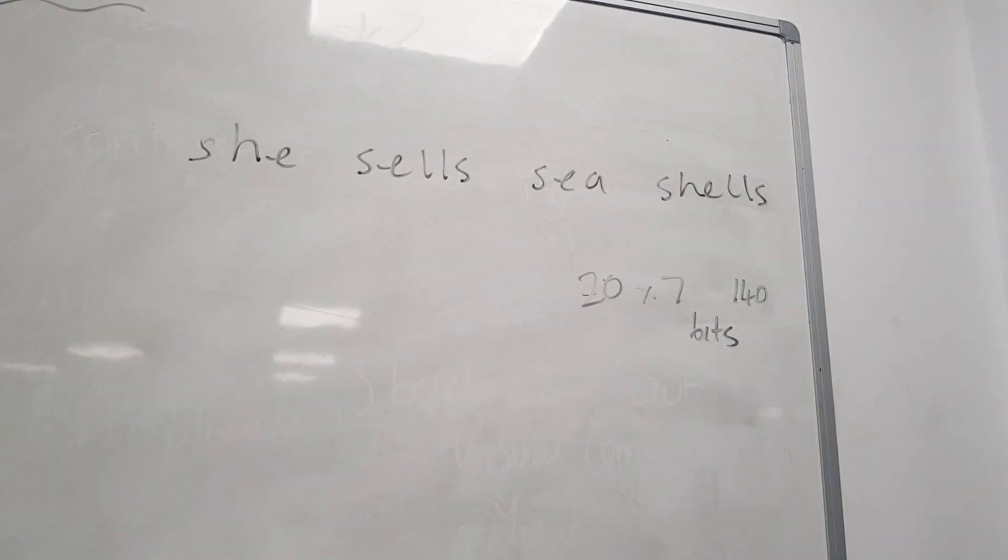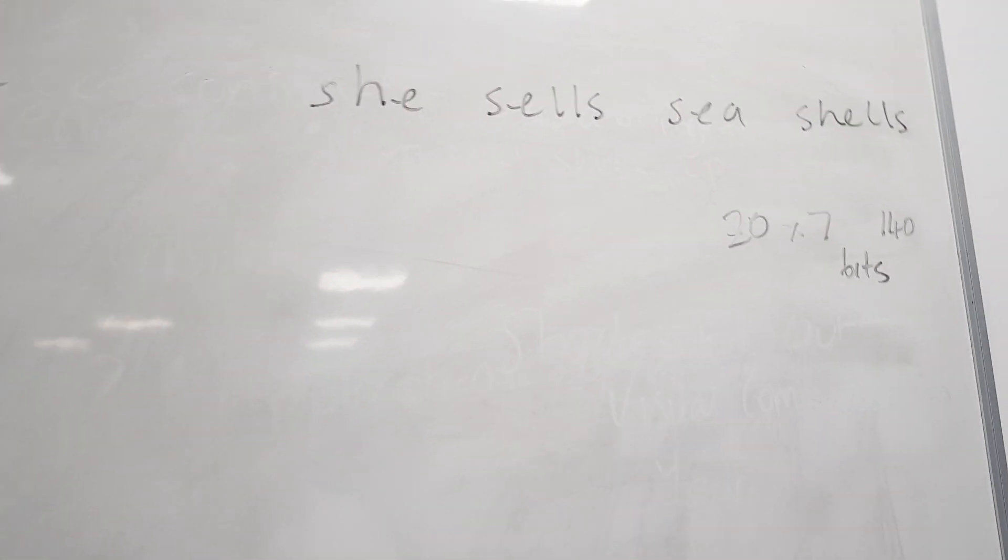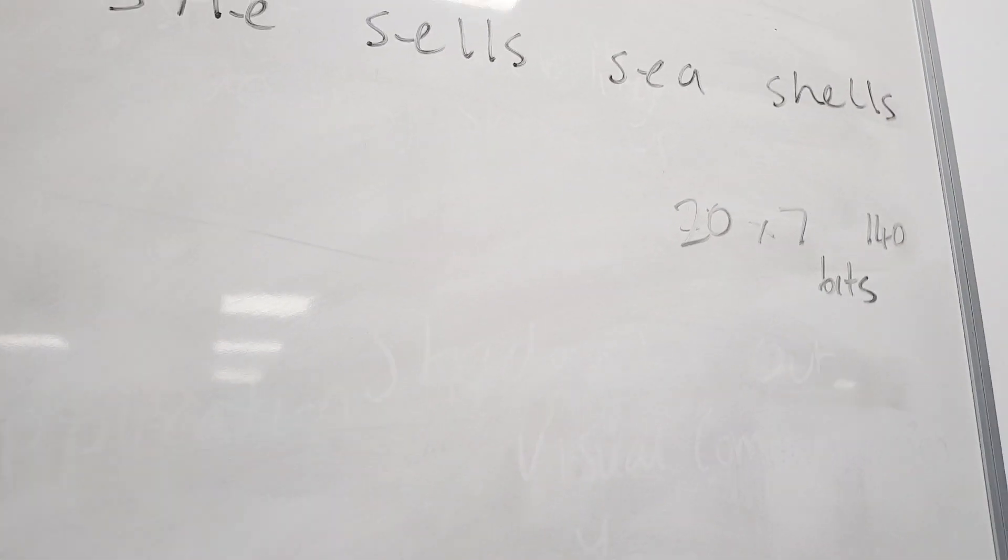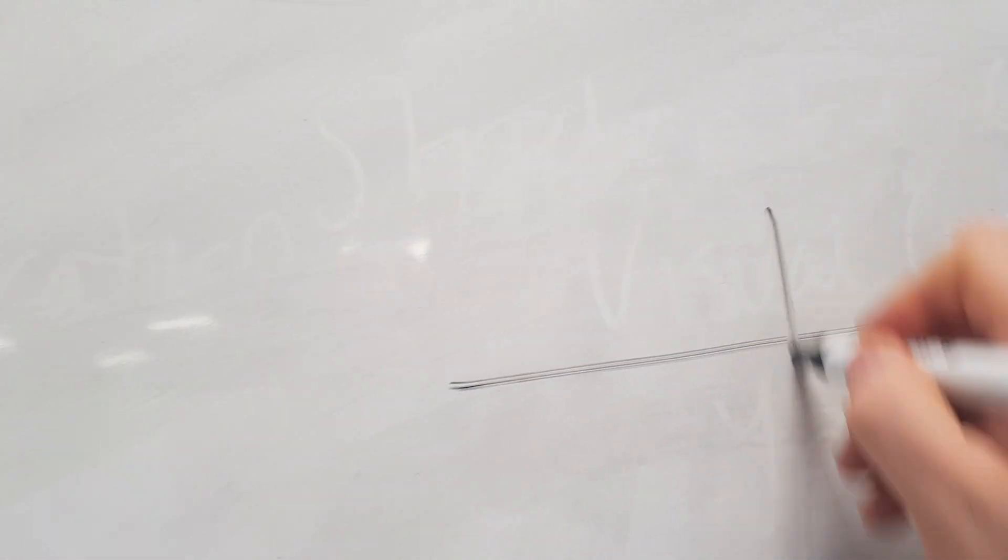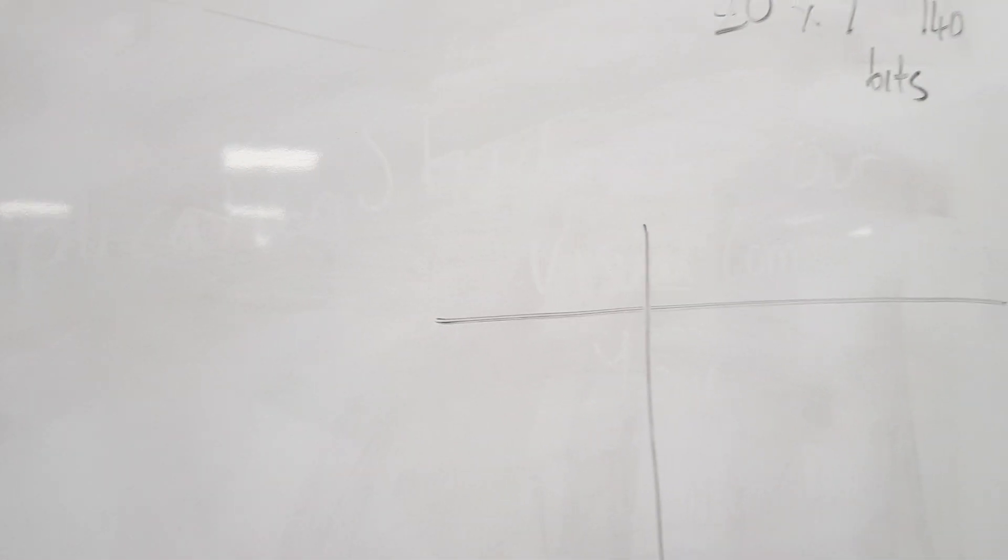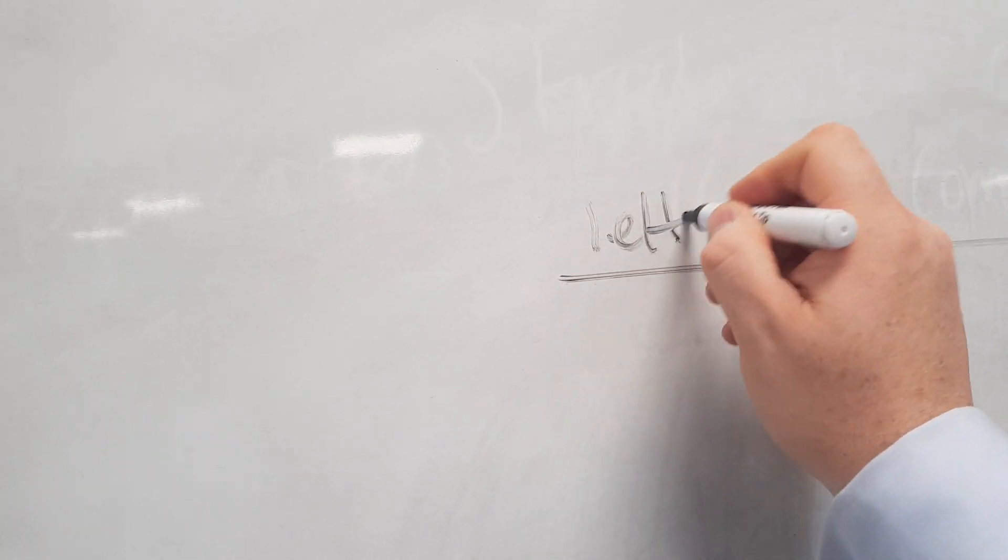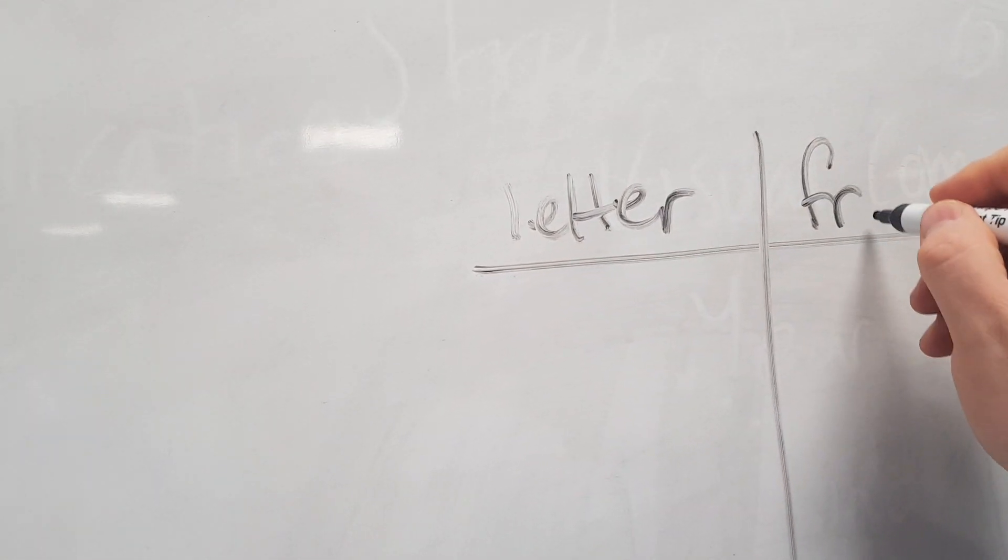So we want to compress that down. How do we go about doing it? Well the first thing that we need to do is draw a frequency table with each letter.